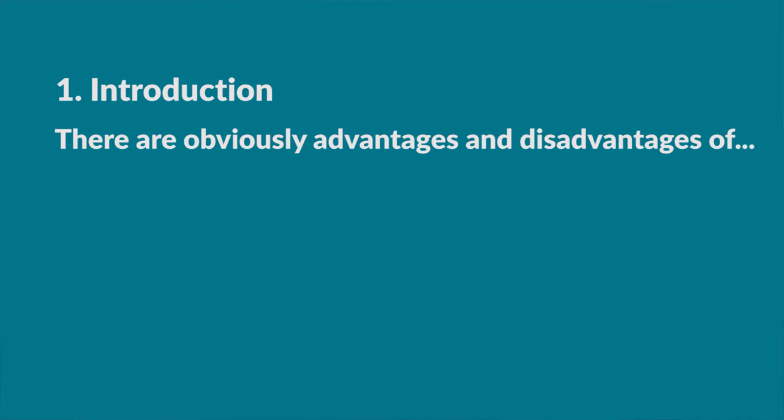Let's go on with the second template: advantages and disadvantages. First, introduce the topic by telling the listener there are advantages and disadvantages of something. You can say 'there are obviously advantages and disadvantages of...' I use the word 'obviously' because it shows you know such words and know how to use them, making you sound more natural and demonstrating a broad range of vocabulary.